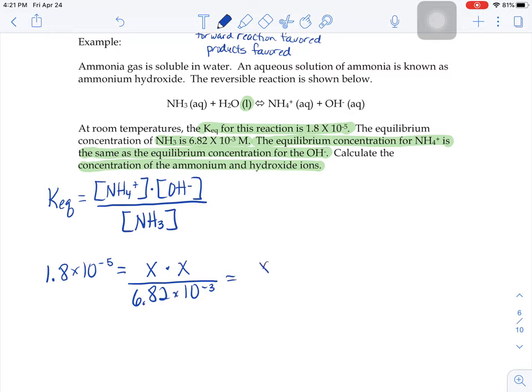In other words, X squared over 6.82 times 10 to the negative 3rd. Now we just have a little algebra problem where we have to solve for that X. If you go to type that in your calculator, X would be 0.00035 molar, or perhaps you might see it written as 3.5 times 10 to the negative 4th molar. Both would be okay.